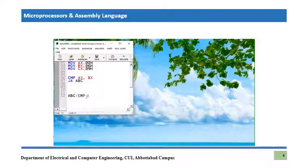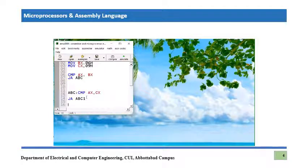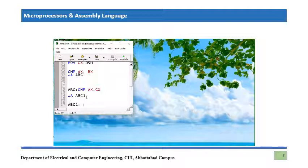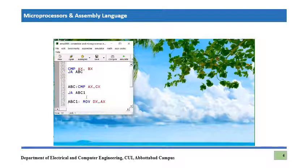Since AX is larger than BX, we now need to compare it with the third number stored in CX. So: CMP AX, CX. We suppose this condition is also true, so we jump to another label — ABC1. At ABC1 we know that AX has been compared with both BX and CX and is larger than both. So we write MOV DX, AX — which moves the value of AX into the DX register — and then HALT the program.